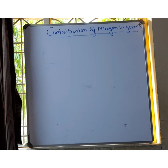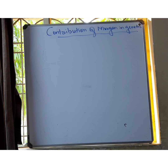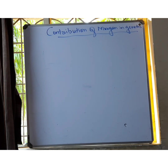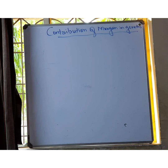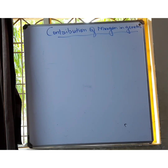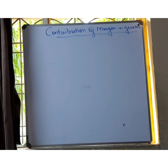Good evening students. This is our third video lecture and today's first topic is the contribution of Thomas Hunt Morgan in genetics. We have completed Mendelian genetics in this chapter. Now we will study a new scientist's contribution in genetics whose name is Thomas Hunt Morgan. Mendel's case study was a garden pea plant, while Thomas Hunt Morgan had research on a different organism, and we will also discuss why he selected that particular organism.